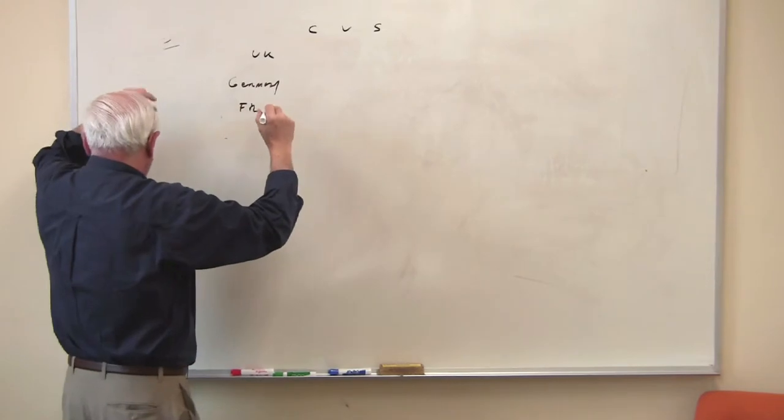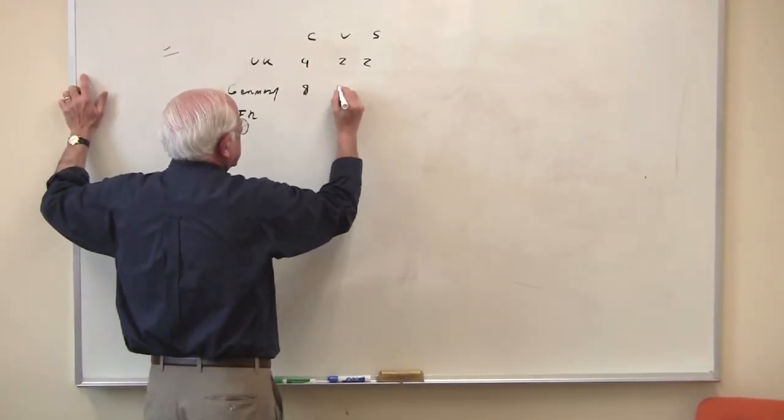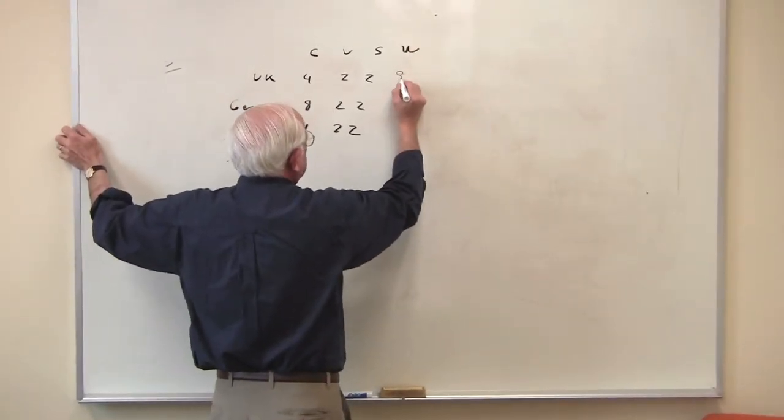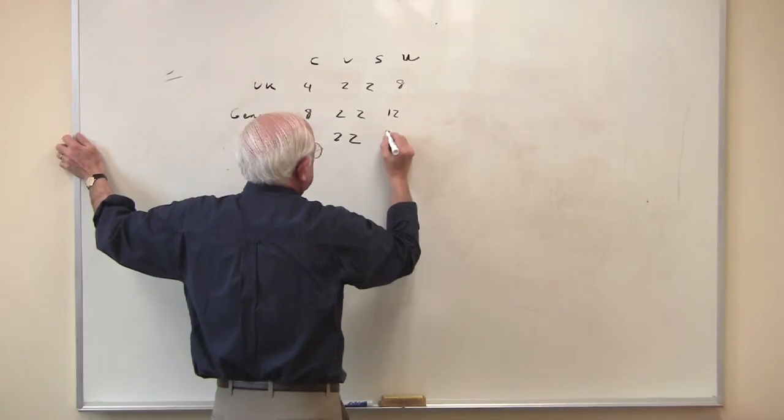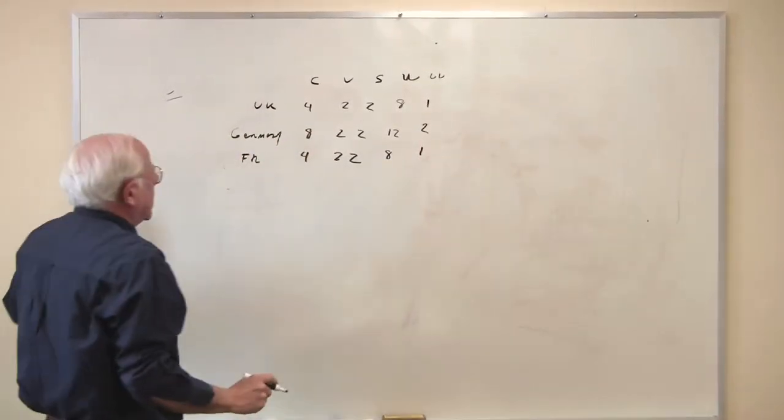So I had here 4, 2, 2, 8, 2, 2, 4, 2, 2. This is the W, the total value. It was 8, 12, 8. The use value is 1, 2, 1.